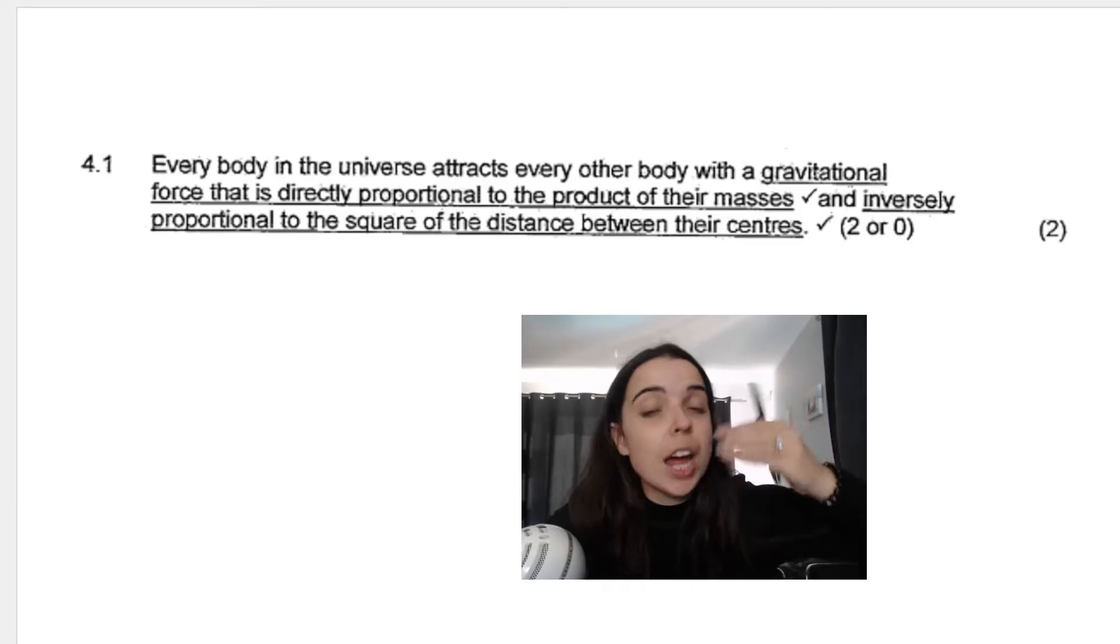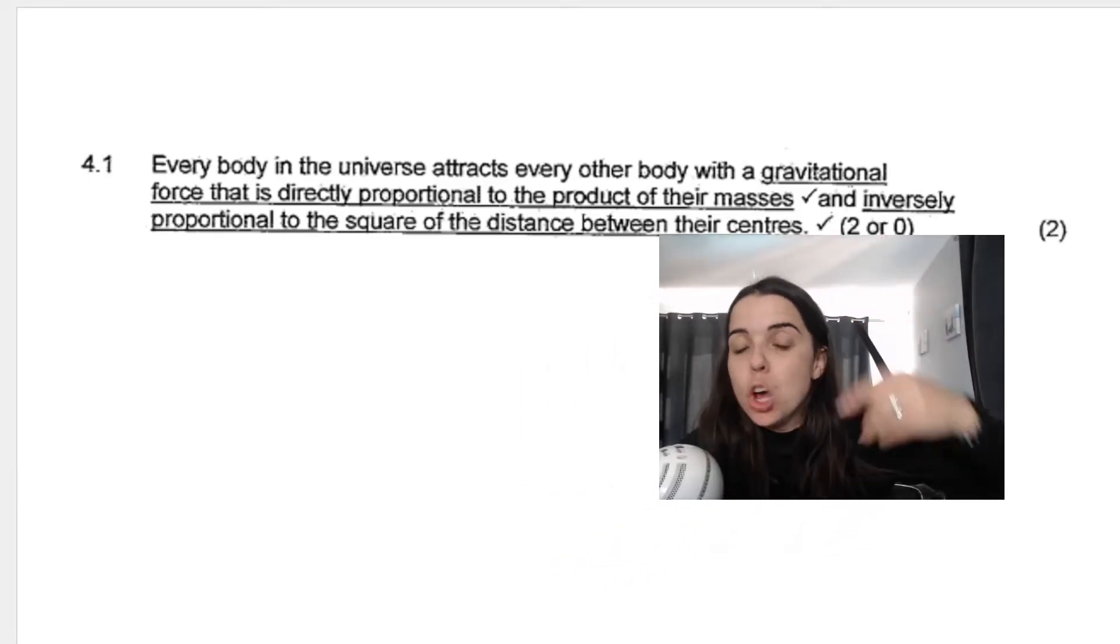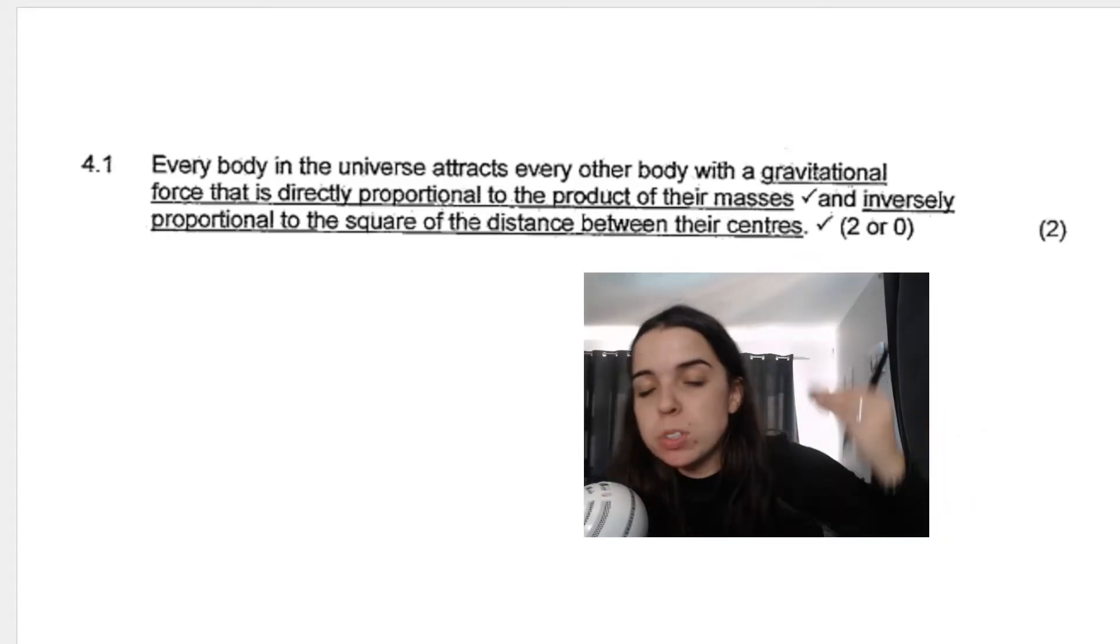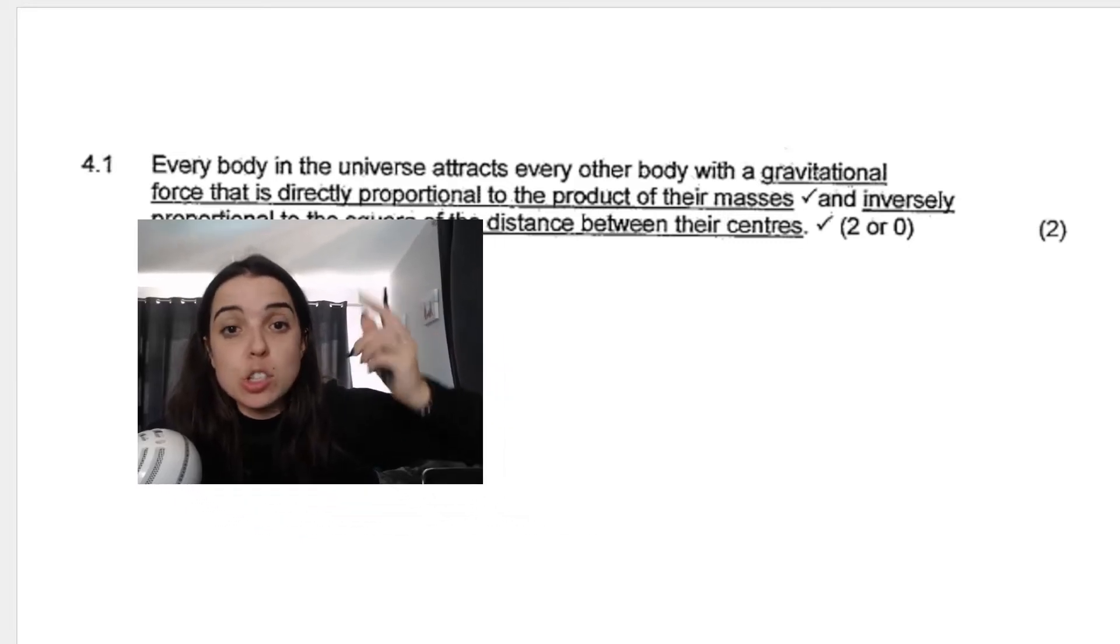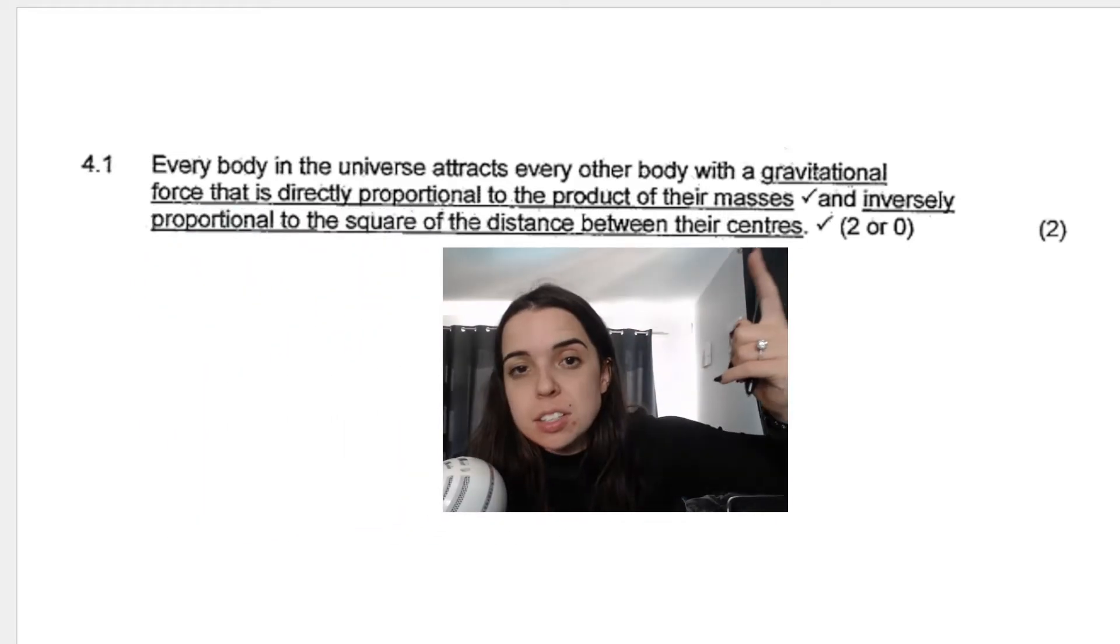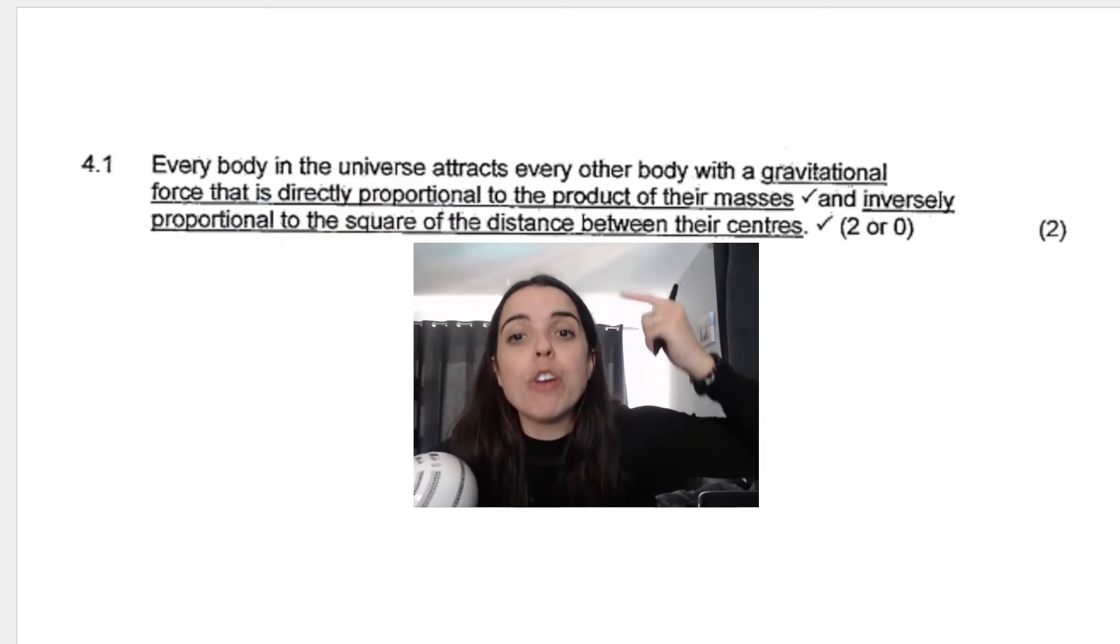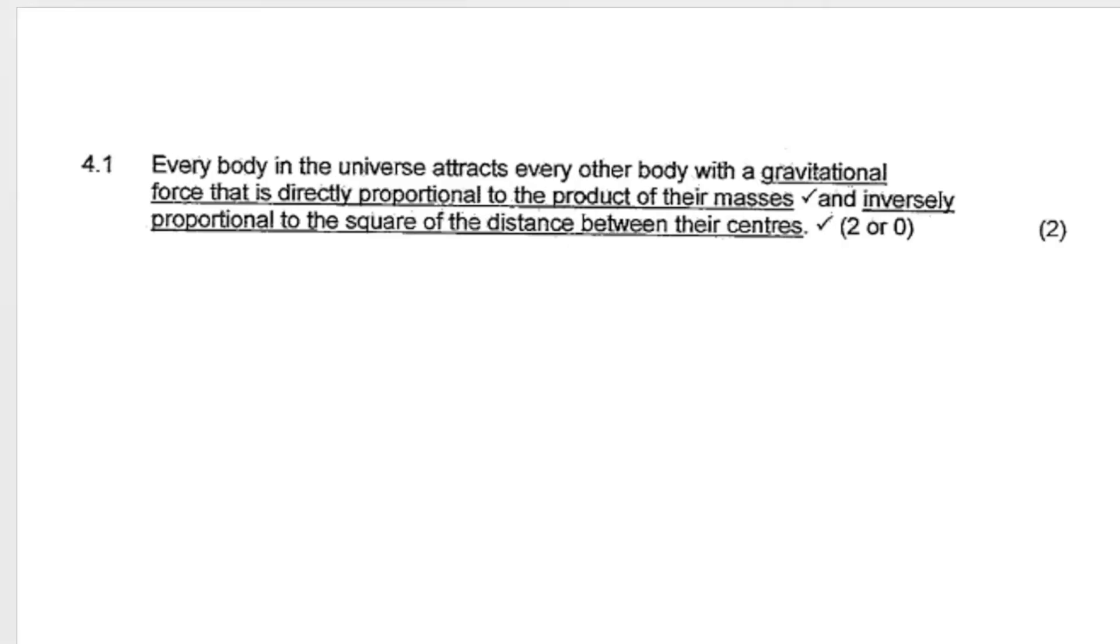So here's the definition and take note how in this particular memo they say two or zero which means if you miss important keywords from the definition which are underlined over here. So for example if you don't say square of the distances, if you don't say between their centers, if you don't say product of the masses, if you don't say these important words they give you zero and what I always tell my students is that this definition is very similar to the formula.